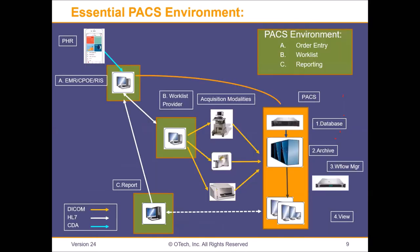What is the essential PACS environment? When you implement a PACS system, you need three essential components: a worklist provider and an order entry system — they go together. Somewhere you need to place an order, whether from an EMR, a CPOE, or a standalone ordering screen where you can order lab tests, physical therapy, and imaging procedures. Then you need a worklist provider and a reporting system. These are the essential components: order entry, worklist provider, and reporting system.